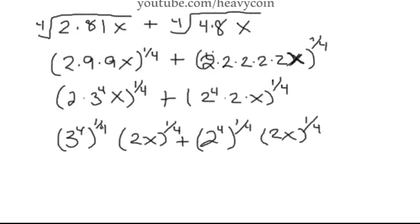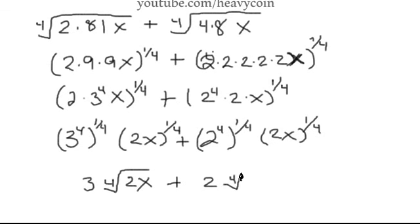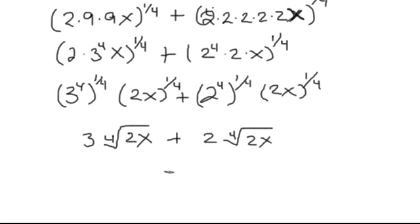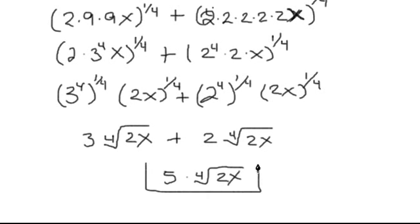We have 3 to the 4th all raised to one-fourth — so you multiply and you're left with 3. Getting everything back in radical form, this becomes 3 times the fourth root of 2x, plus 2 times the fourth root of 2x. Since both of these are the same, we can add their coefficients, and this becomes 5 times the fourth root of 2x. The big part of this was factoring 162 and 32.